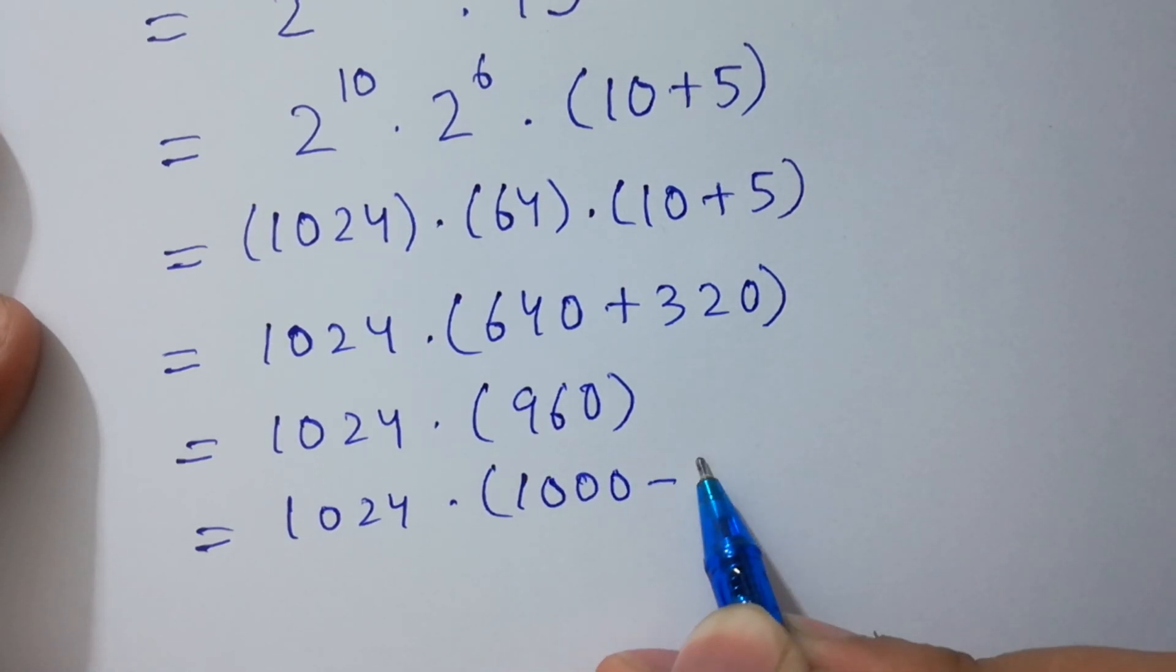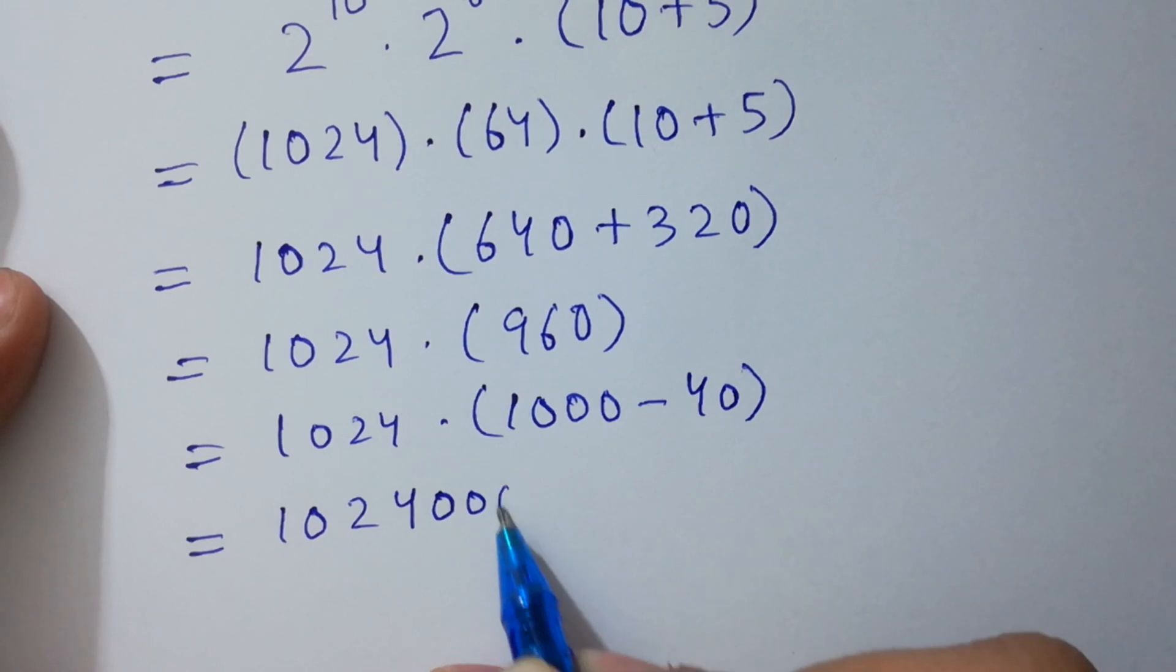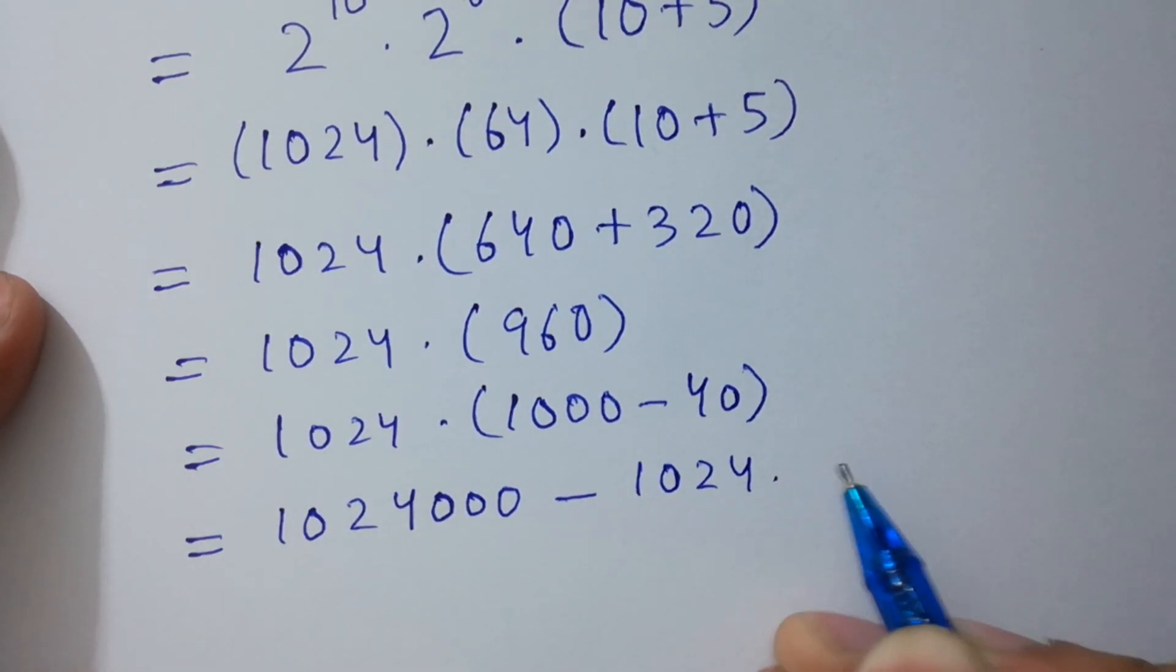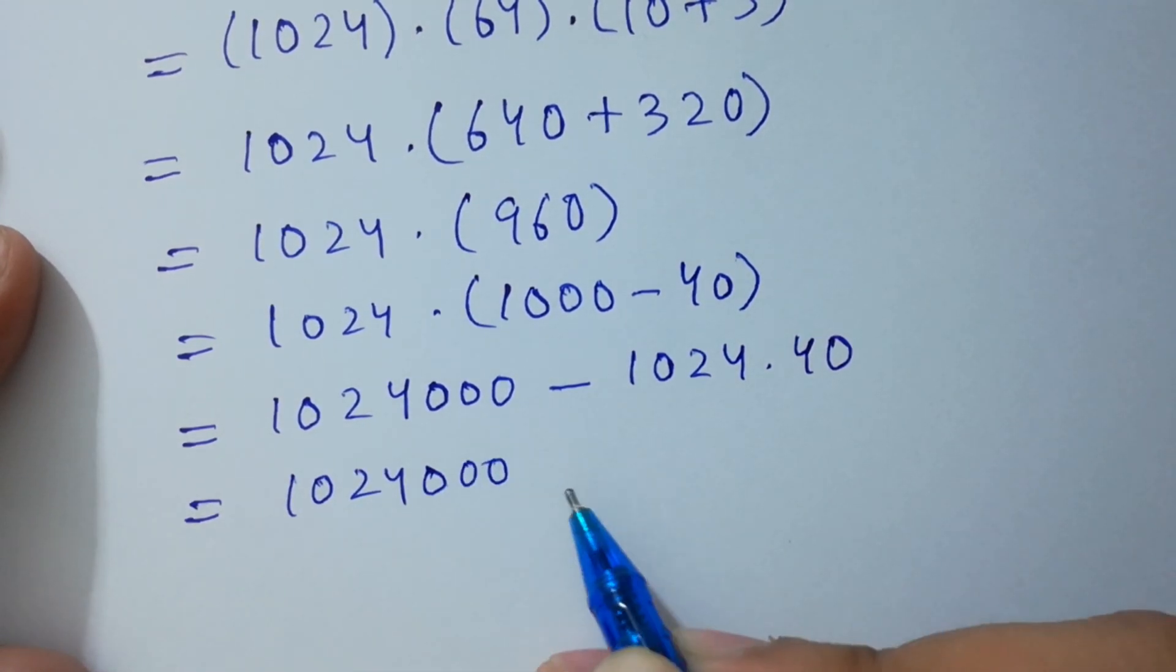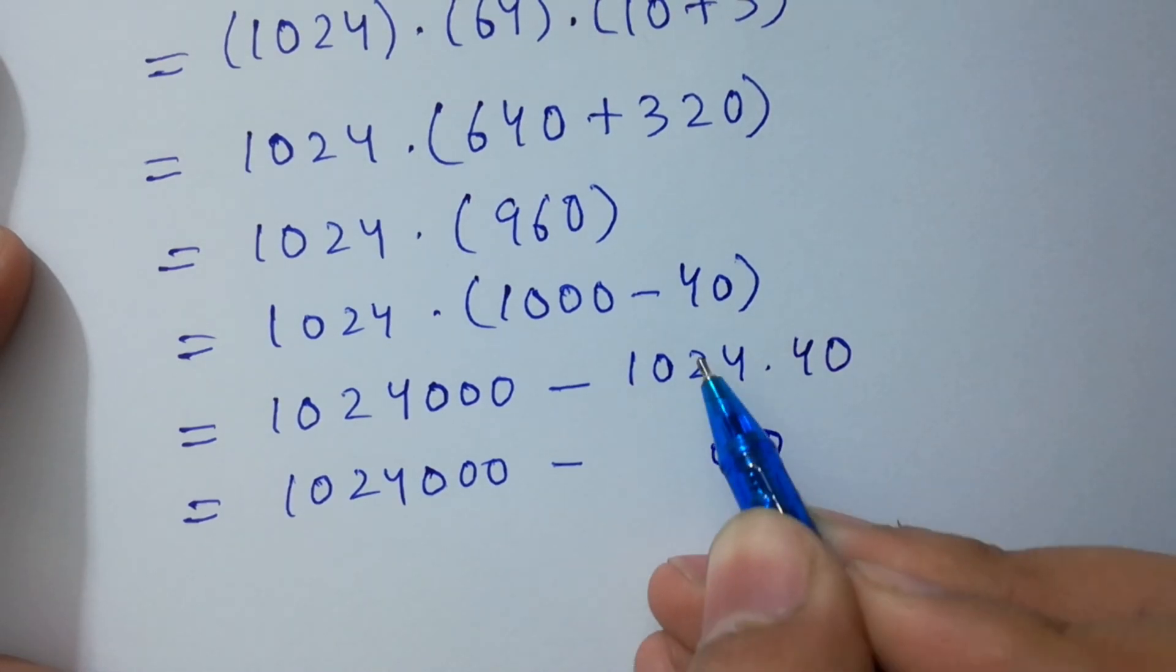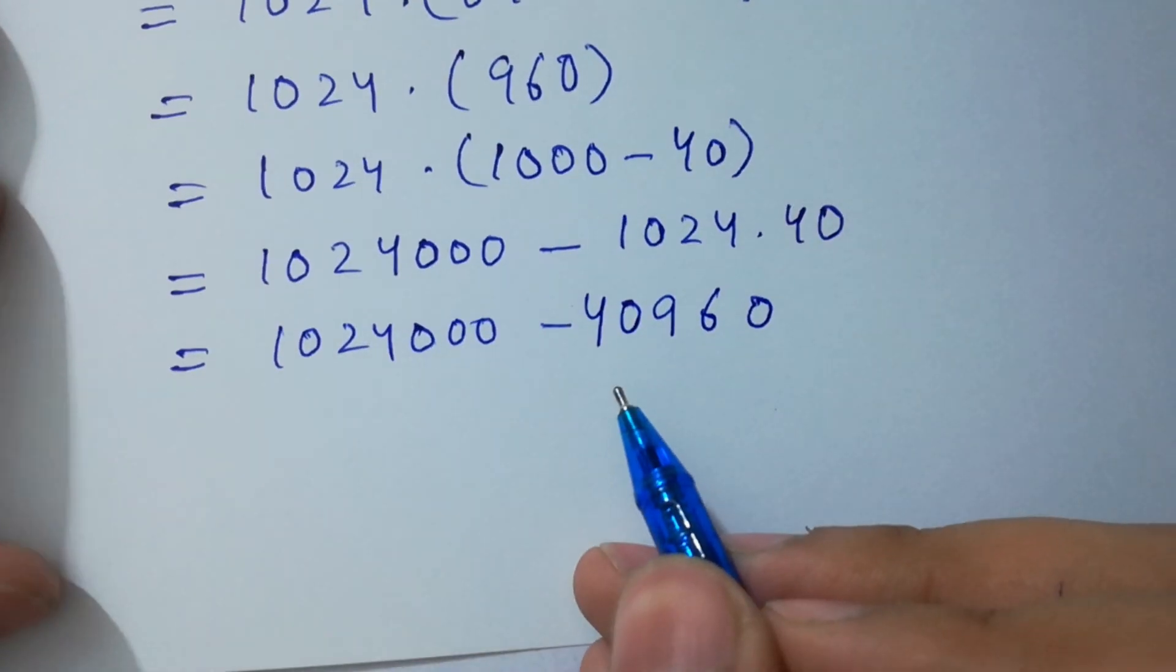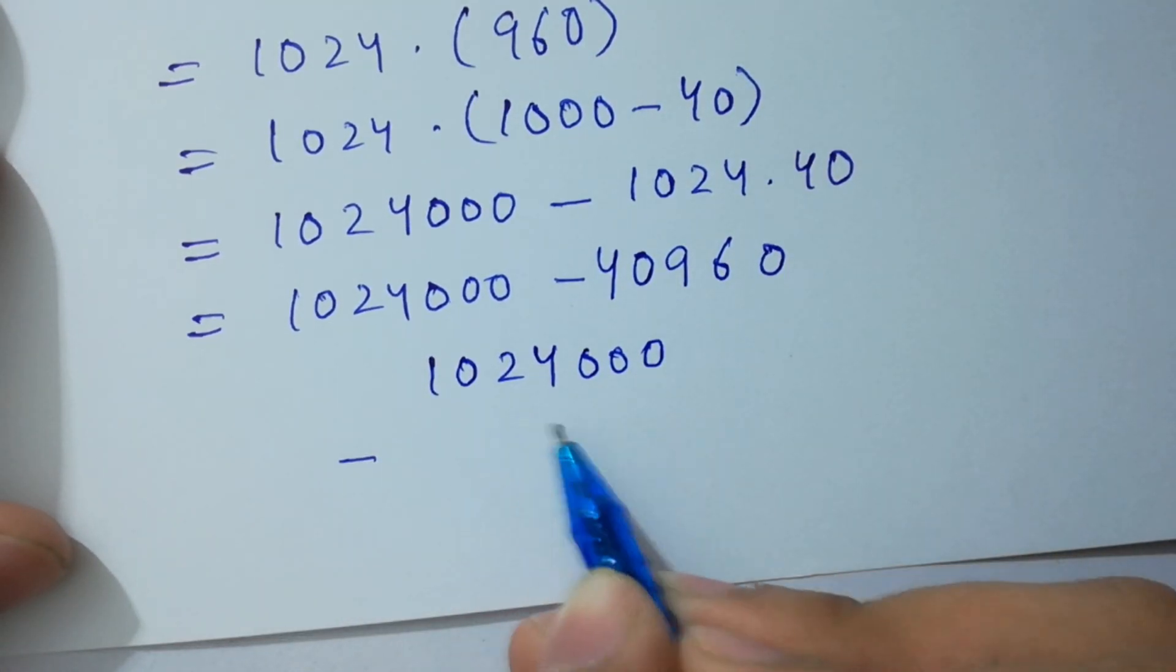960 can be written as 1000 minus 40. Here, 1024 times 1000 will be 1024 with three zeros. Minus, in the next step, 1024 times 40. Here, 1024 with three zeros minus—very simple to solve—zero as it is, 4 times 4 is 16 carry 1, 4 times 2 is 8 plus 1 is 9, 4 times 0 is 0, 4 times 1 is 4.